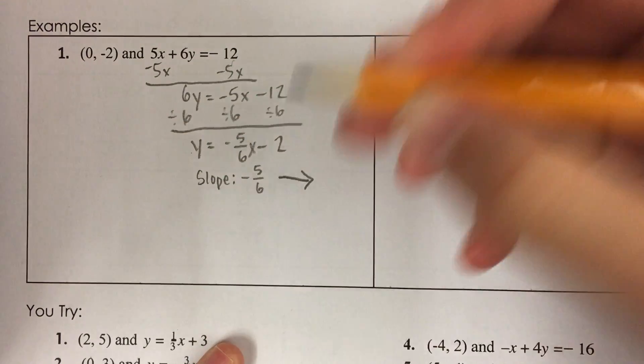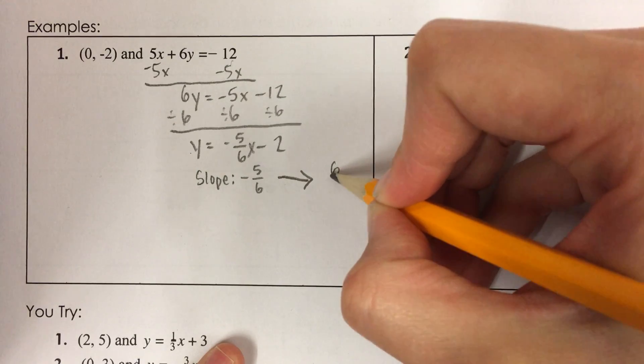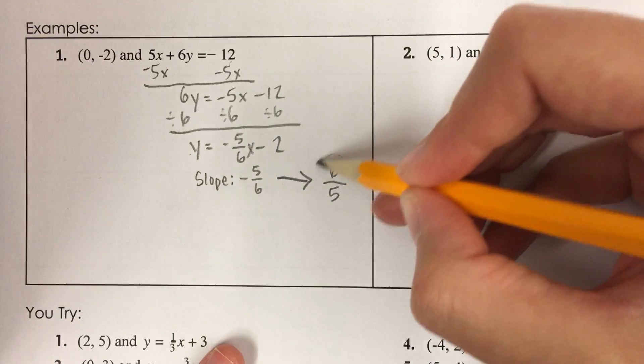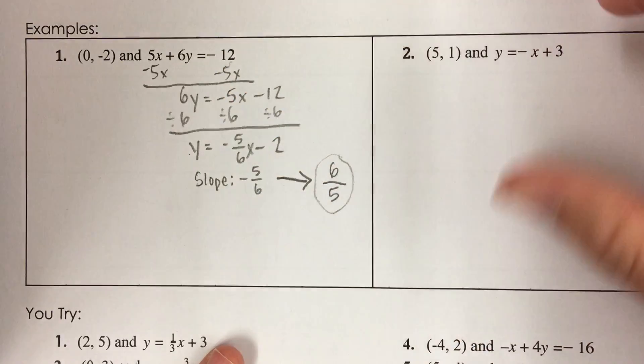Okay, so the slope I'm going to use, I'm going to flip it over to 6 over 5 and I'm going to change the sign so it goes from negative to positive and goes from 5 over 6 to 6 over 5. So this is the slope that I'm going to use because I want the slope that's perpendicular to that line.